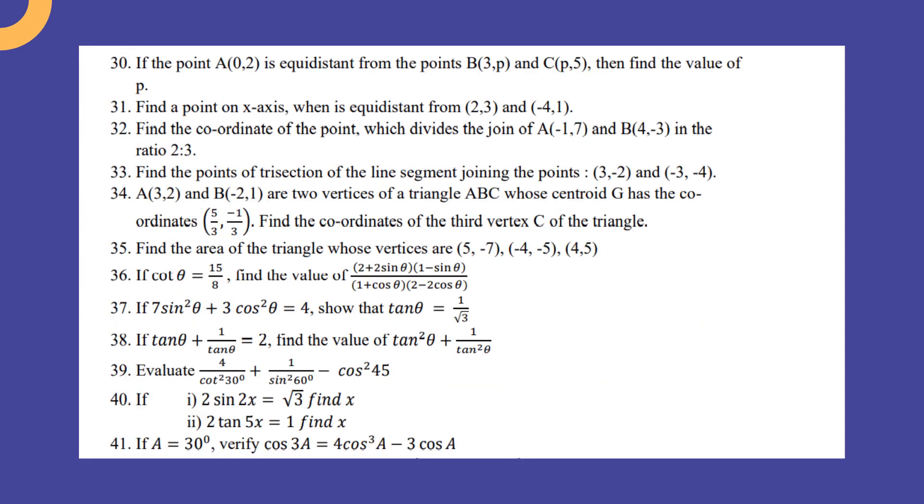If the point A(0, 2) is equidistant from the points B(3, p) and C(t, 5), find the value of p.